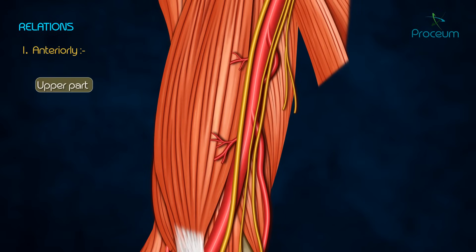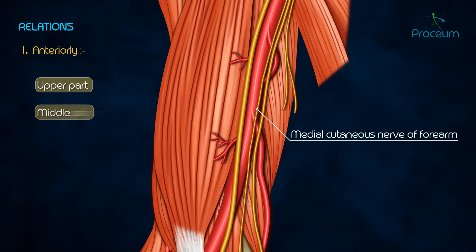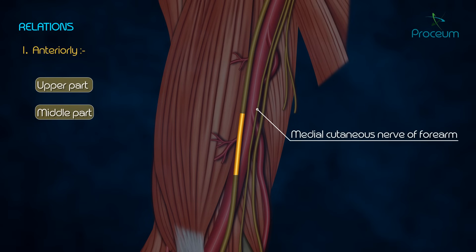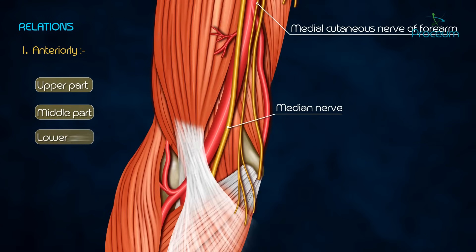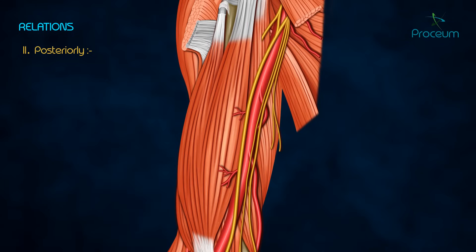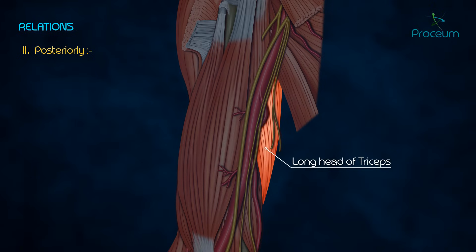Anteriorly: in the upper part it is related to the medial cutaneous nerve of the forearm; in the middle part it is crossed from lateral to medial side by the median nerve; and in the lower part it is crossed by the bicipital aponeurosis. Posteriorly, from above downwards, it is related to the long head of triceps, medial head of triceps.